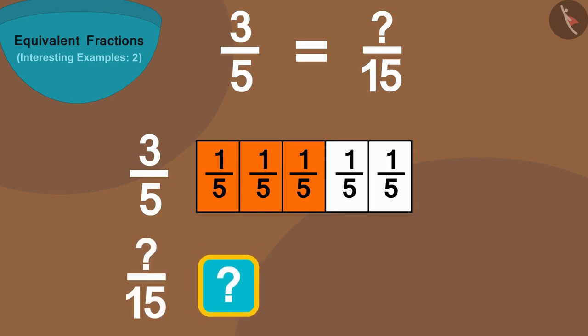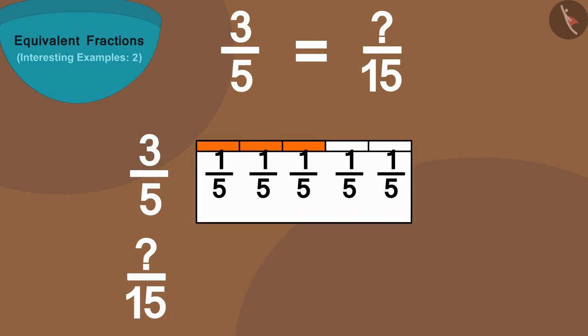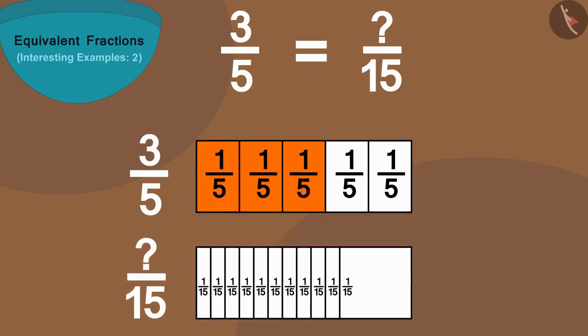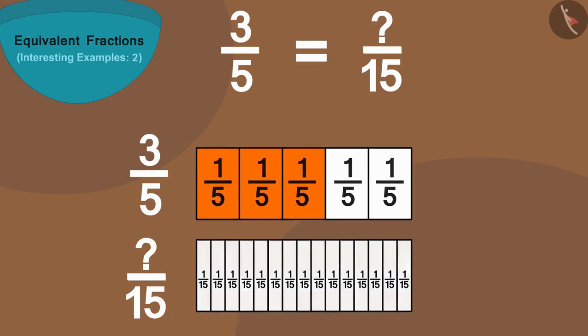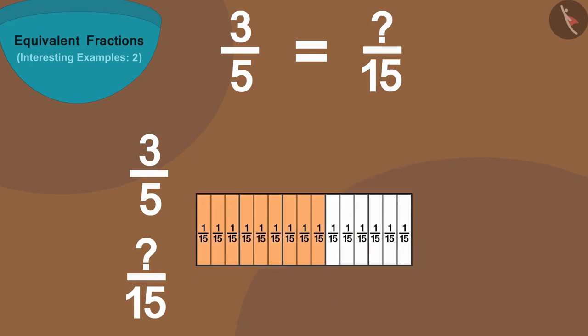15. Come, let us make a strip of equal length of this strip just below it and divide it into 15 equal parts. Now, if we put this strip on top of the first strip in this way, we will find that 15 parts of this strip are equal to 5 parts of the first strip.